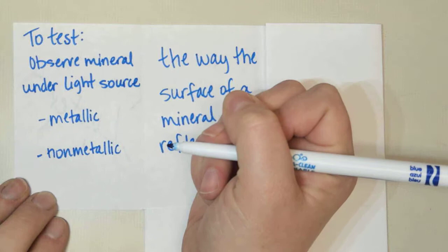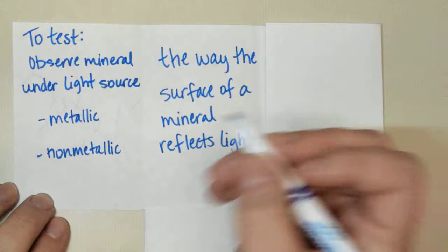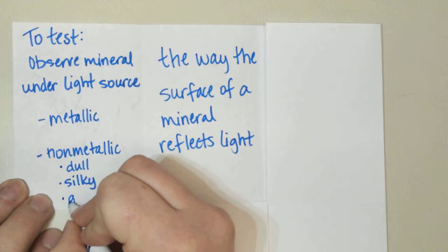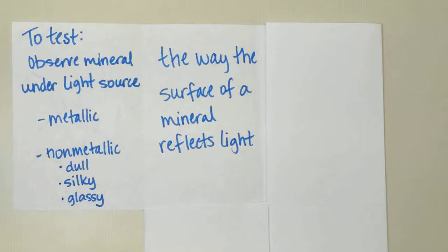Now remember that it can be either metallic, which is shiny, or it can be nonmetallic, which is not shiny. Sometimes we can be more specific when we're talking about minerals. If it's nonmetallic, it can also be called dull, silky, or glassy, depending on how it looks. And when we actually start testing, we will look at a little bit more detail on what those terms actually mean.